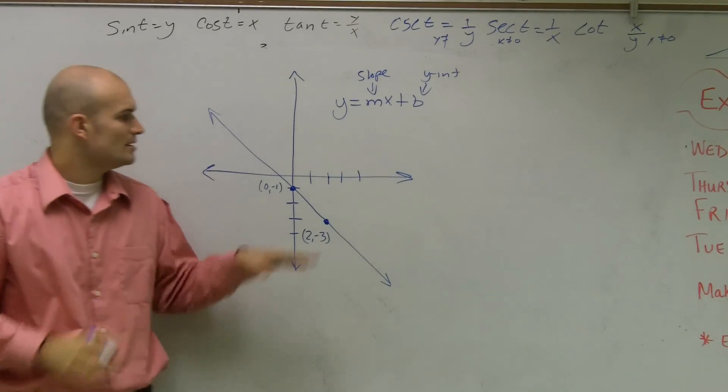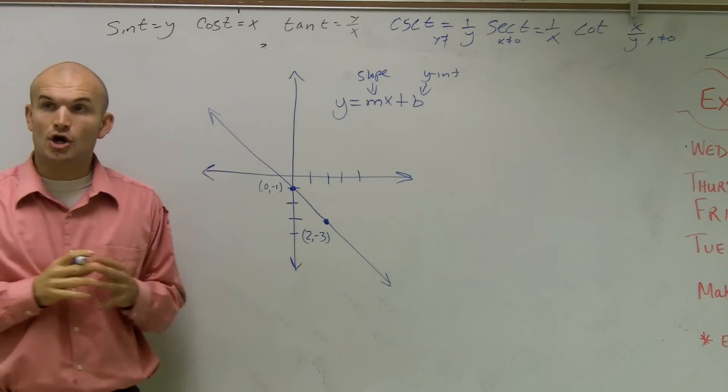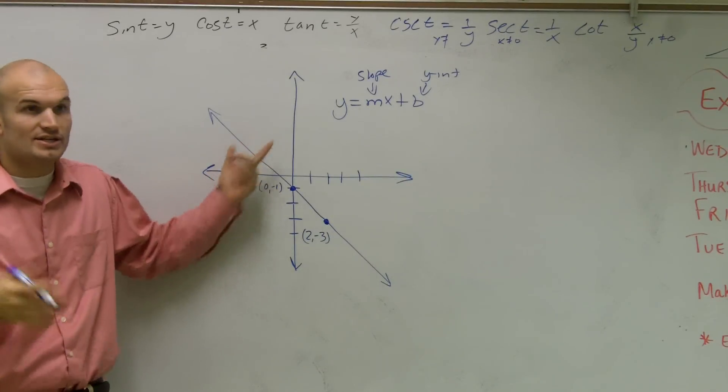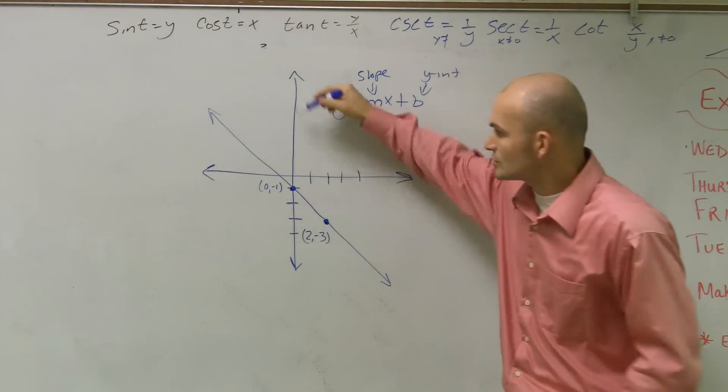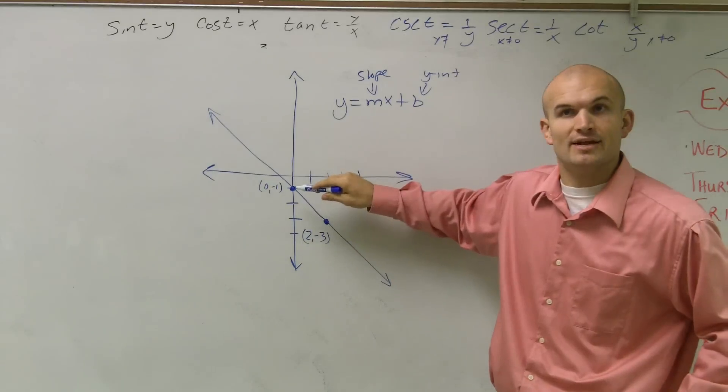So to find our y-intercept and our slope, first I need to determine where's the y-intercept. Remember, the y-intercept is where the graph crosses your y-axis. So I look and the graph crosses at negative 1.